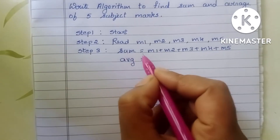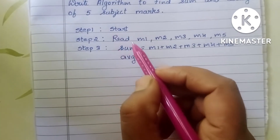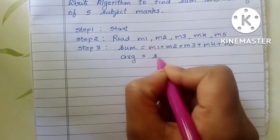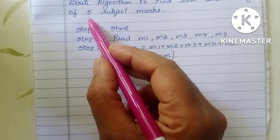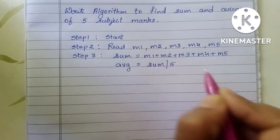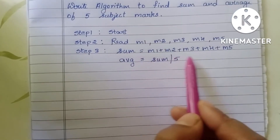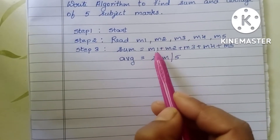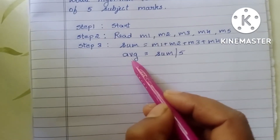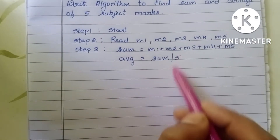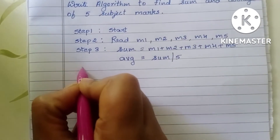Next we have to find the average. Average is equal to sum divided by the number of subjects. The number of subjects is five, so average is equal to sum divided by five. Here five means the number of subjects.